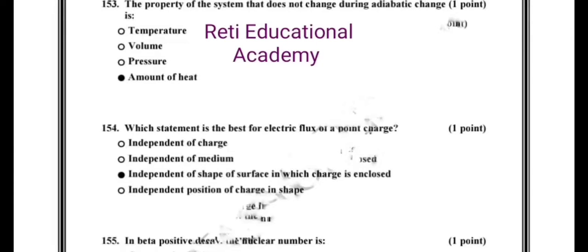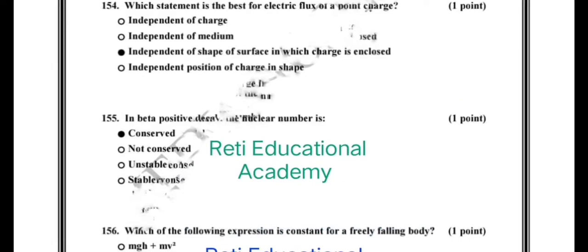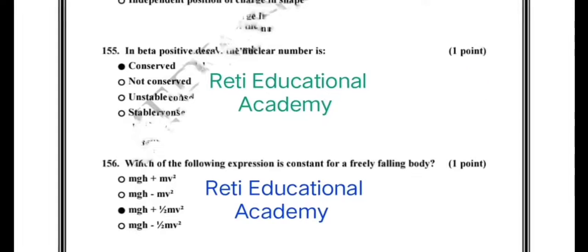Question number 154: which statement is best for electric flux for a point charge? The correct option is it is independent of the shape of the surface in which the charge is enclosed. Question number 155: in beta positive decay, the nuclear number is conserved. Question number 156: which of the following expressions is constant for a freely falling body? The correct option is mgh + ½mv².